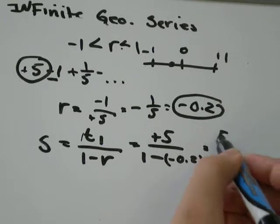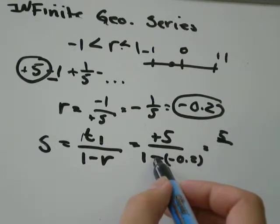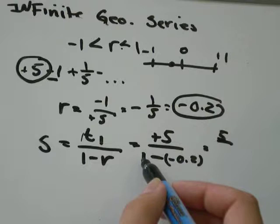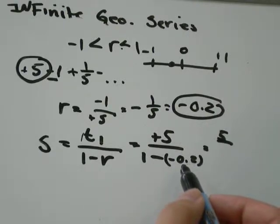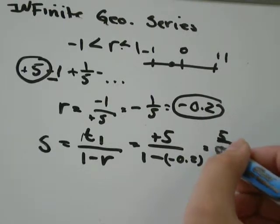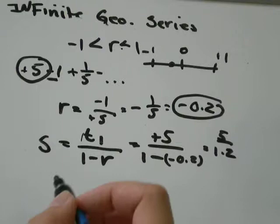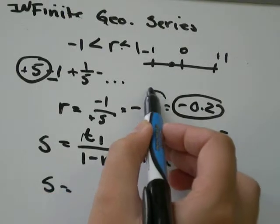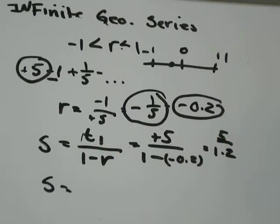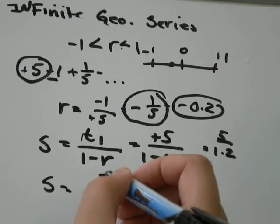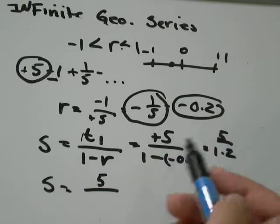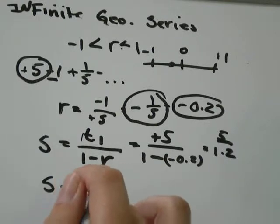So we've got 5 over minus a negative number is just positive. 1 plus 0.2 is going to be 1.2. And 5 divided by 1.2 is going to equal 4.1666 repeating. So it would have been better if we used, we would have got a nicer answer instead of a decimal approximation if we had not put the common ratio as a decimal. So I'll show you how to do that.